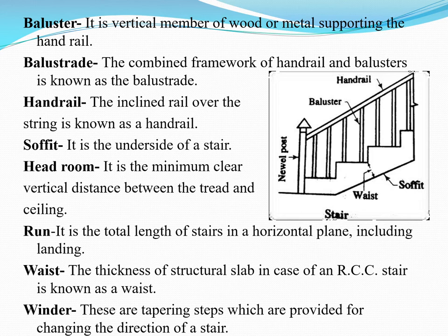The soffit is the underside of the stair — the sloped surface below. Headroom is the clear distance between your tread and the ceiling portion, and it should be around 2.1 meters for better transportation from one floor to another. Run is the total horizontal length of your staircase, and it includes the landing portion as well as the steps. Waist is the thickness of your staircase, which includes the RCC structure.